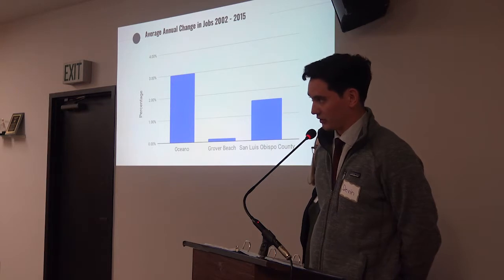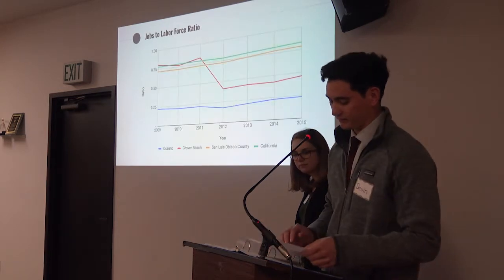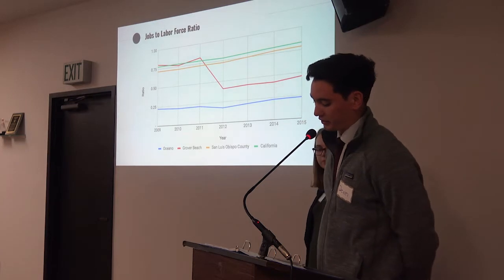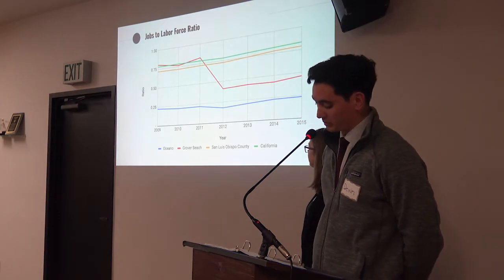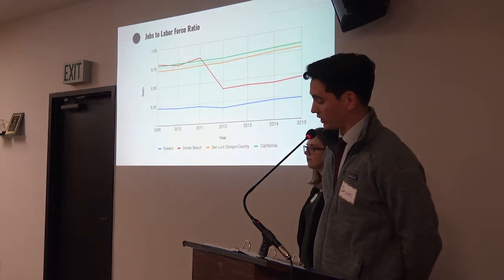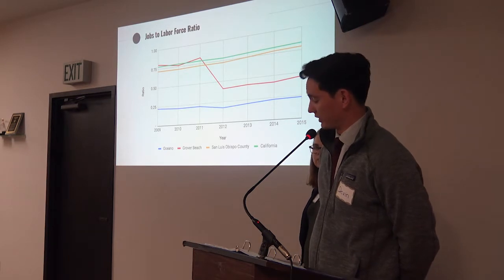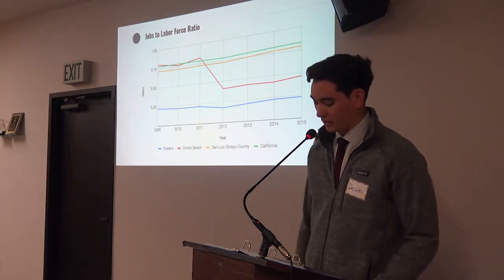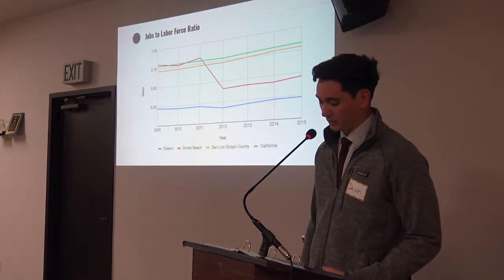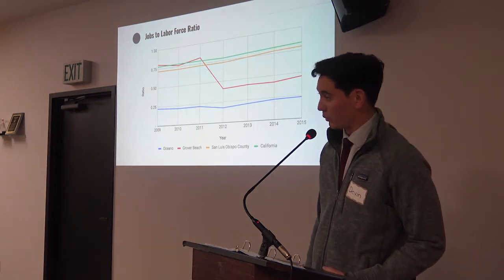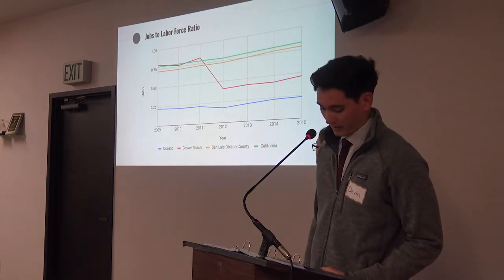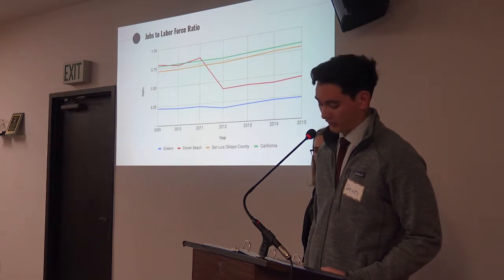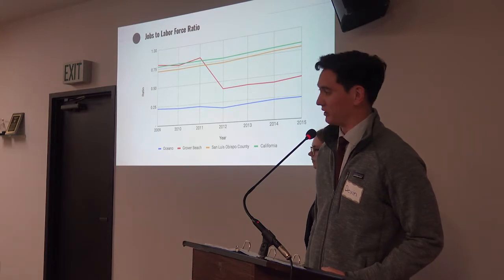But these numbers don't tell the whole story. Although the number of jobs in Oceano has been growing steadily, the ratio of available jobs to the number of individuals eligible to work has been low compared to neighboring communities and the county. This chart shows that in Oceano, the number of jobs available relative to the number of people in the labor force has historically been about one-third that of the county, and lately just about one-half that of its neighbors. In other words, fewer job prospects are available to people aged 16 and over in Oceano compared to those in neighboring communities and the county.